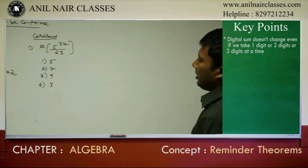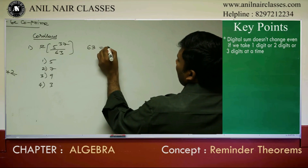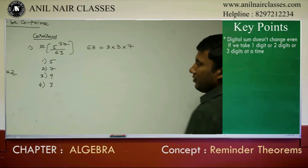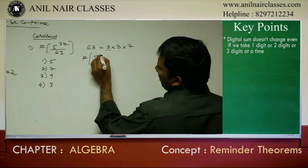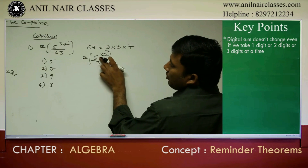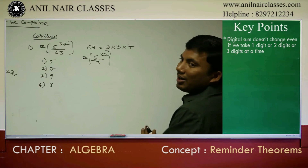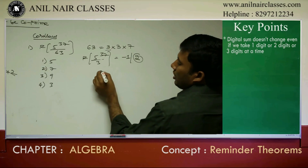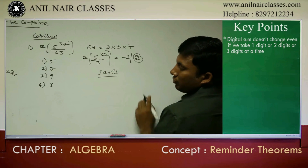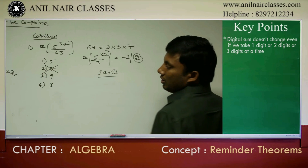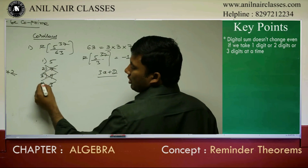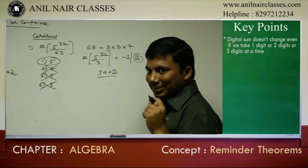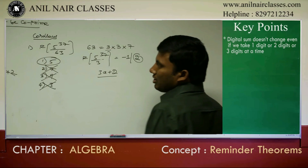Reason carefully: 63 must be broken down as a product of co-prime bases. It is 3 into 3 into 7. Take 5^37 divided by 3: 5 equals 6 minus 1, so minus 1 power 37 is minus 1. The negative remainder is minus 1, so the positive remainder is 2. The answer should be of the form 3a plus 2. Option 5 is 3 into 1 plus 2. This is like a digital sum concept — it doesn't give the right answer, but it helps in eliminating the wrong answers.